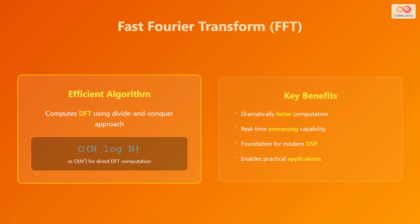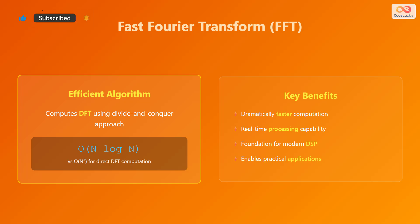The Fast Fourier Transform, or FFT, is an efficient algorithm to compute the discrete Fourier transform (DFT) using a divide-and-conquer approach. Its complexity is O(N log N), compared to O(N²) for direct DFT computation. Key benefits include dramatically faster computation, real-time processing capability, forming the foundation for modern DSP, and enabling practical applications.